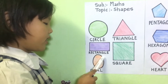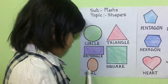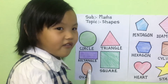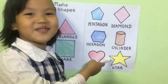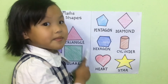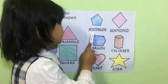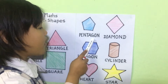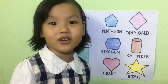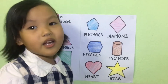The next one is square. The square spelling is S-Q-U-A-R-E, square. The square color is green. The next one is oval. The oval spelling is O-V-A-L, oval. The next one is pentagon. The spelling of pentagon is P-E-N-T-A-G-O-N, pentagon.